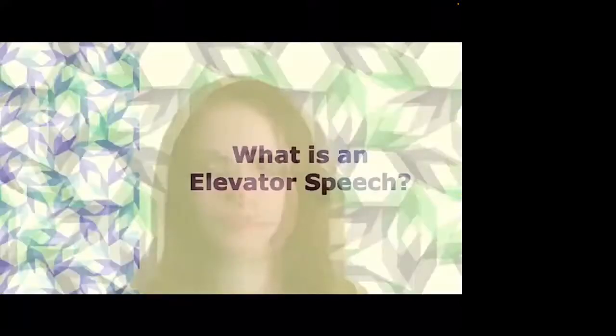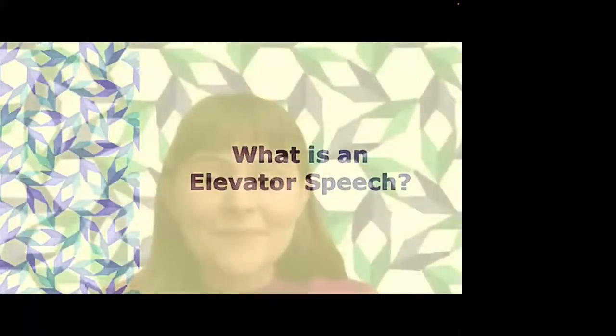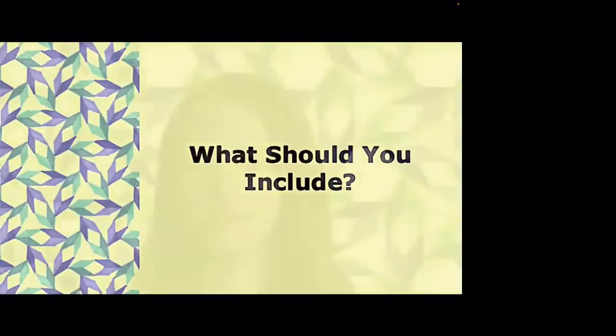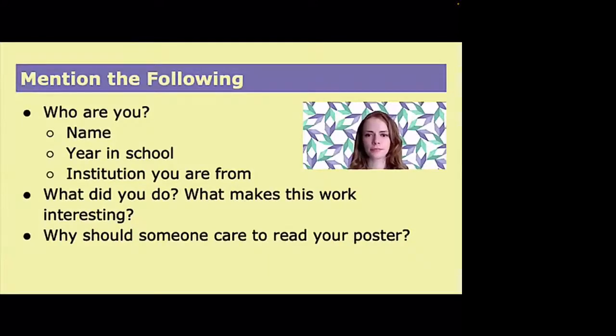In this section, we will be talking about how to prepare an elevator speech. An elevator speech is what you start with when someone approaches you and asks about your poster. Be prepared to introduce yourself and give the gist of your poster in one minute or less. Your elevator speech should include: who you are — your name, year in school, and institution; what you did and what makes the work interesting; and why someone should care to read your poster. Highlight the main points without being technical, and then if the person expresses interest, dive into more technical details.